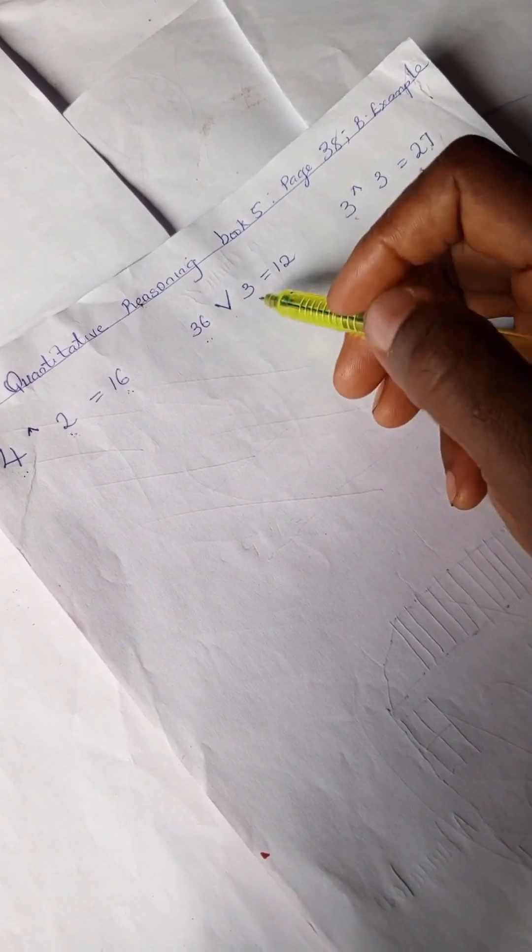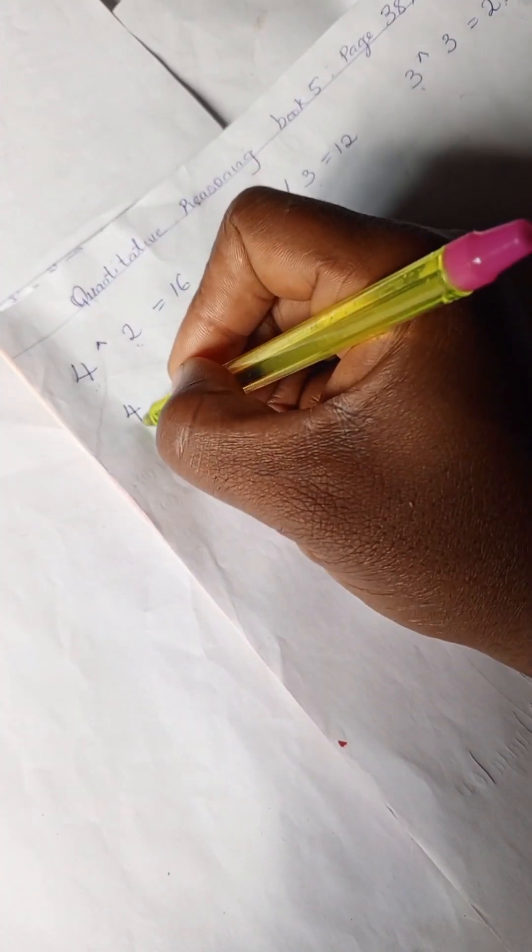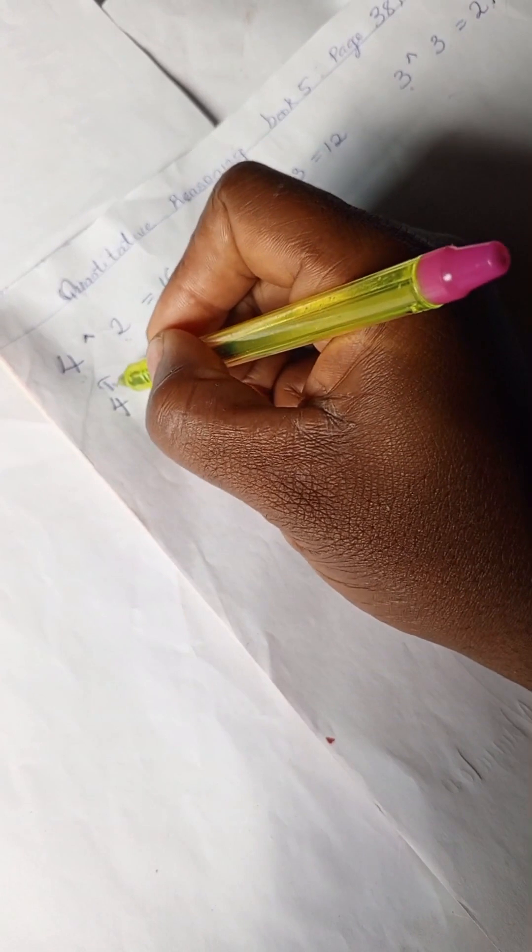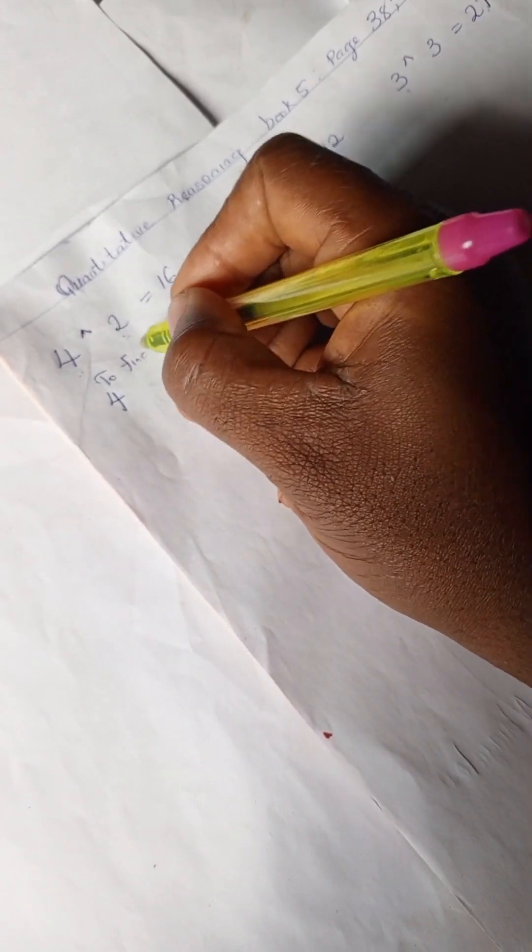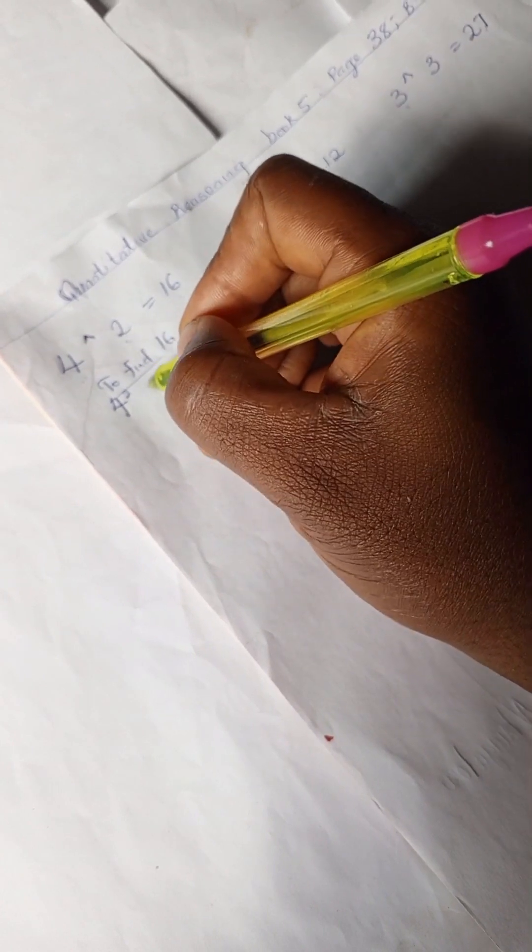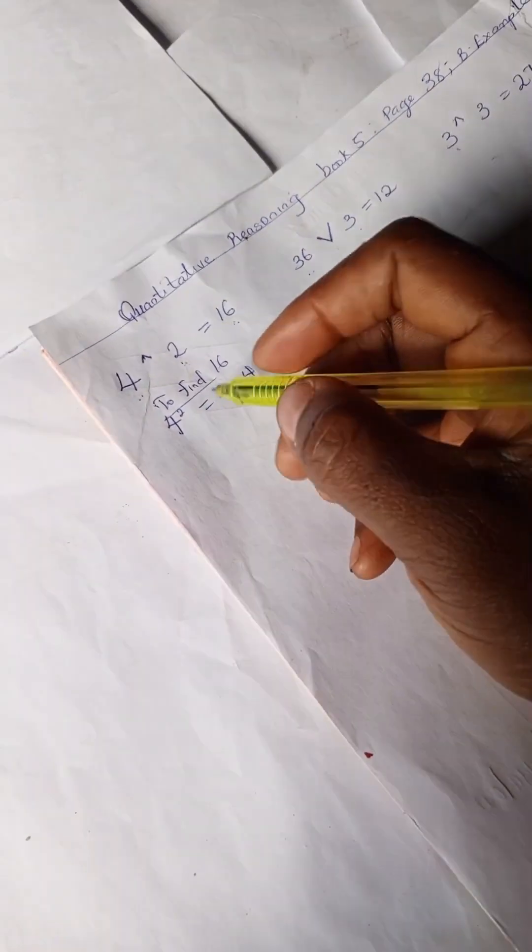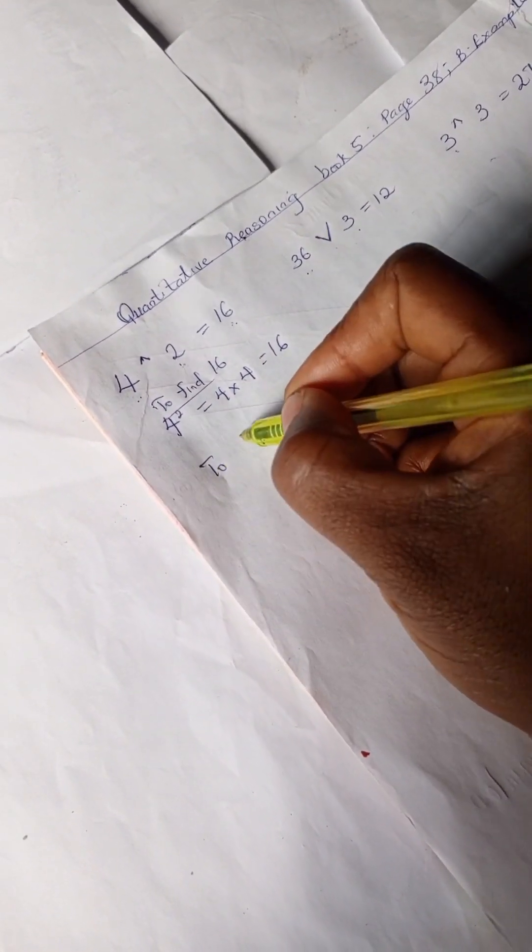Then for this we have 36, we have a shape like v and we have three, which means 36 divided by 3 you have 12. So we can go with this. So 4 to the power of 2 to find 16, you have 4 to the power of 2 which is 4 times 4, which is 16.